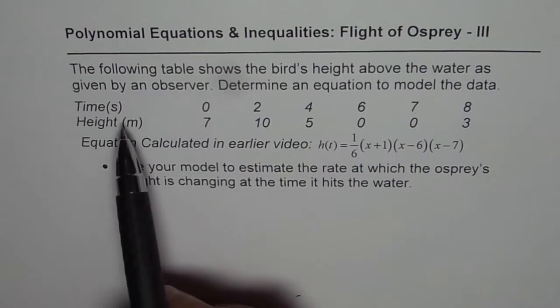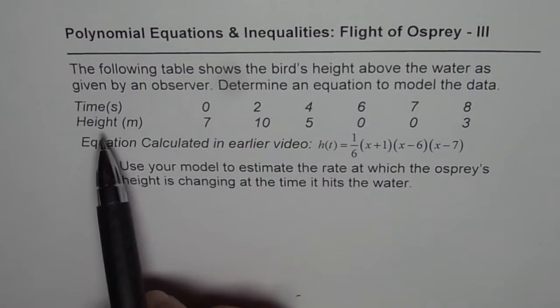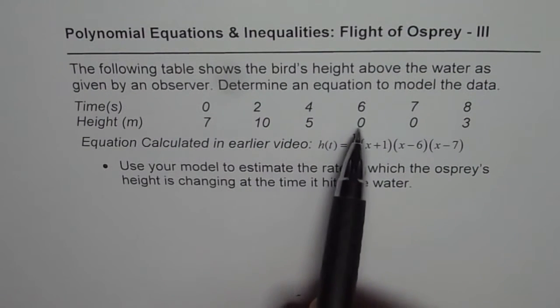This we did in the first part. Time given to us was 0, 2, 4, 6, 7, and 8. Respective heights were 7, 10, 5, 0,